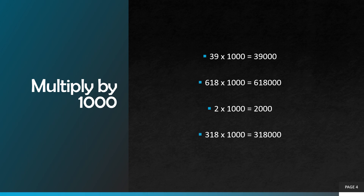Third question: two multiplied by one thousand. We are going to add three zeros at the end. One multiplied by two is equal to two, so our correct answer will be two thousand.